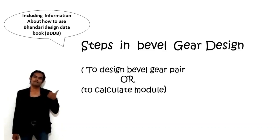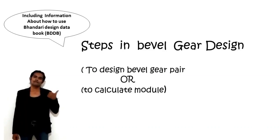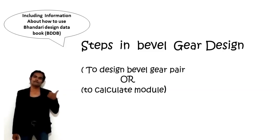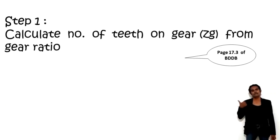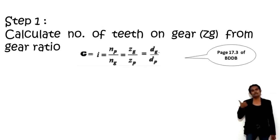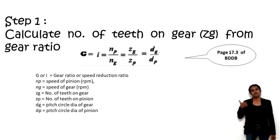For the step-by-step procedure of bevel gear design — to design the bevel gear or calculate the module — follow this procedure. I have included which formula is on which page number of the Bhandari design data book. Step 1 is on page 17.3. From the gear ratio G or I, the formula is NP upon NG = ZG upon ZP = DG upon DP, where NP and NG are speeds of pinion and gear, ZG and ZP are number of teeth, and DG and DP are pitch circle diameters.